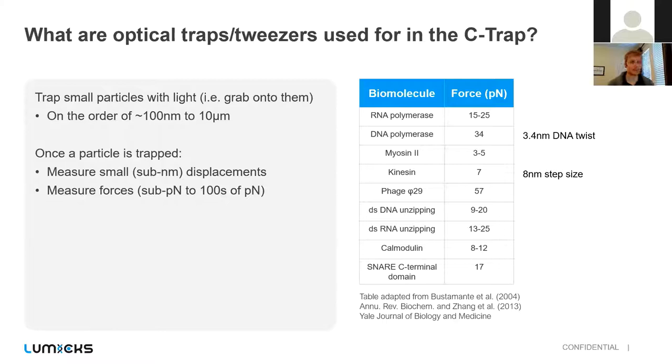And so for the C-TRAP, you can't necessarily trap atoms, but you can trap small particles on the order of about 100 nanometers to 10 microns. And once you trap a particle, you can measure very small displacements, so sub nanometer displacements, as well as both sub piconewton forces to hundreds of piconewtons of forces. Some of the examples I'll show today demonstrate this range of displacement force measurements. And why this is well suited for studying biological systems is because if you look at things like DNA polymerase, or maybe your kinesin motors, you'll see that they have forces on the order of piconewtons. And then you're dealing with step sizes that are often on the order of nanometers.